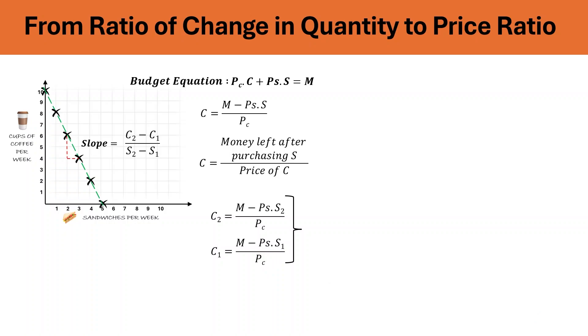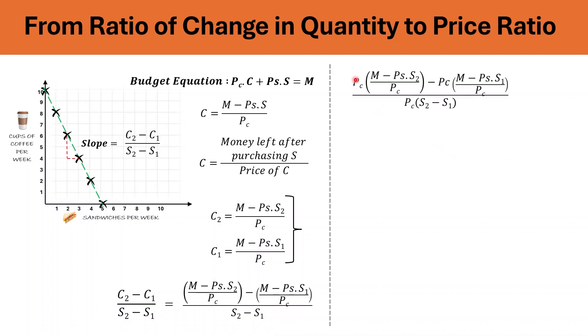Now, if we substitute these values of C2 and C1 in our slope formula here, this is what we are going to get. So, instead of C2, we replace this value, which is M minus PS into S2 over PC minus M minus PS into S1 over PC, and the whole thing divided by S2 minus S1. Here, we are multiplying the numerator and the denominator by PC. And when we do that, we can easily cancel out this PC and this PC and this PC and what we are left with is this equation.